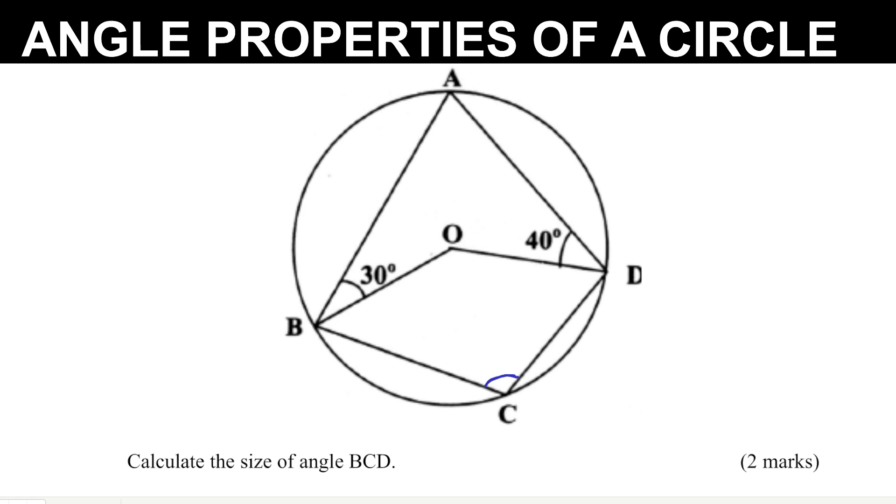Looking at angles 30 and 40, if you draw a straight line to the center there, there is something that you are going to notice. This is the radius, all this is the radius, and we are forming two isosceles triangles.